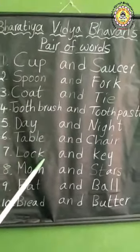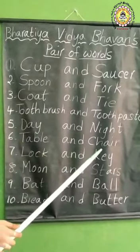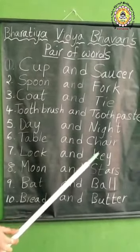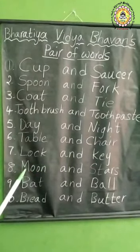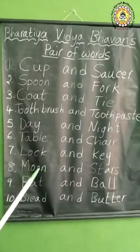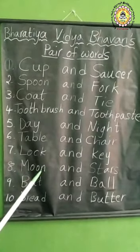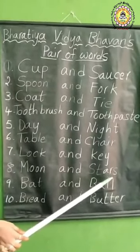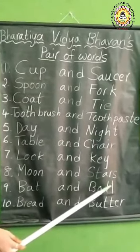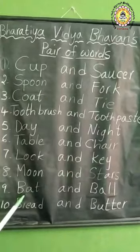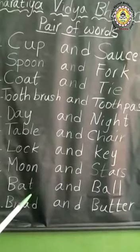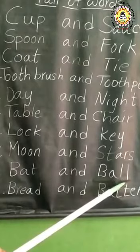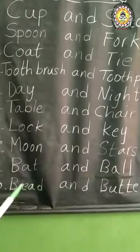Next one: L-O-C-K — lock. Lock and key. K-E-Y — key. Next one: M-O-O-N — moon. Moon and stars. S-T-A-R-S — stars. B-A-T — bat. Bat and ball. B-A-L-L — ball.